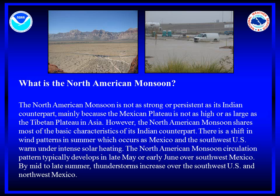The North American monsoon circulation pattern typically develops in late May or early June over southwest Mexico. By mid to late summer, thunderstorms increase over the southwest United States and northwest Mexico. Rainfall during the monsoon is not continuous — it varies considerably depending on a variety of factors. There are usually distinct bursts of heavy rain, followed by breaks with little or no rainfall.